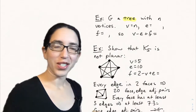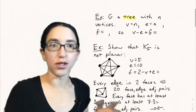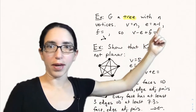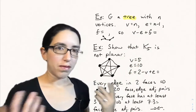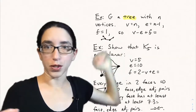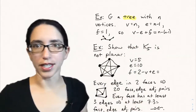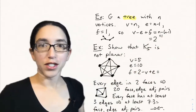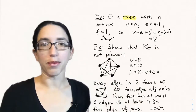Let's consider trees. Trees are connected graphs that don't have any cycles, so they're certainly planar. A tree with n vertices has n minus one edges, so V is n and E is n minus one. Since there are no cycles, there's just the one outer region, so F is one. Then V minus E plus F equals n minus (n minus 1) plus one, which simplifies to two. So every tree has Euler characteristic two, and Euler's formula says that's true for any planar graph.